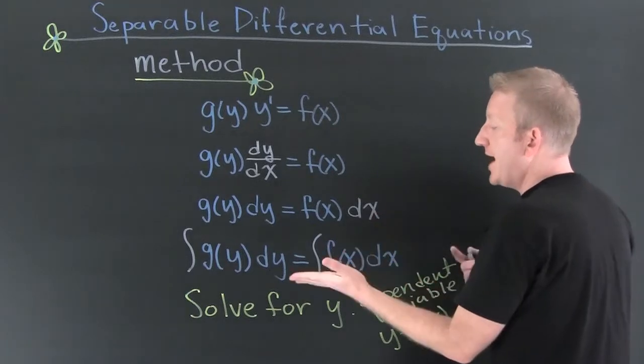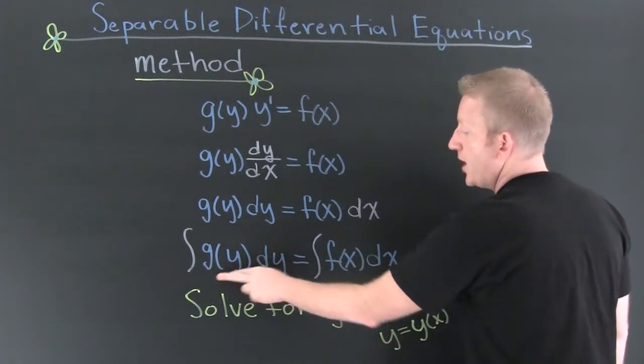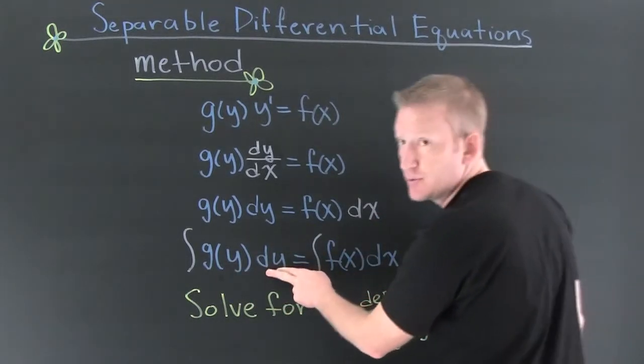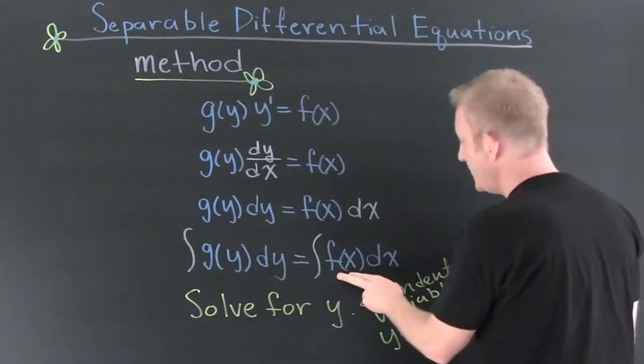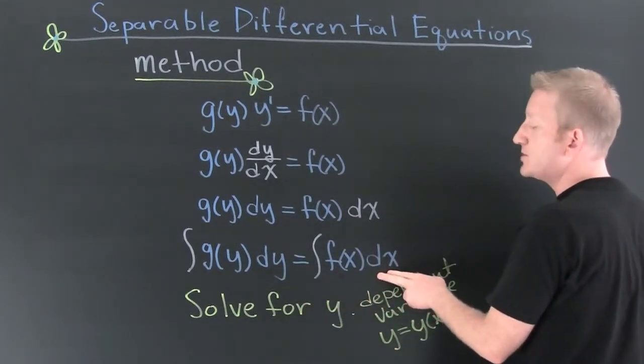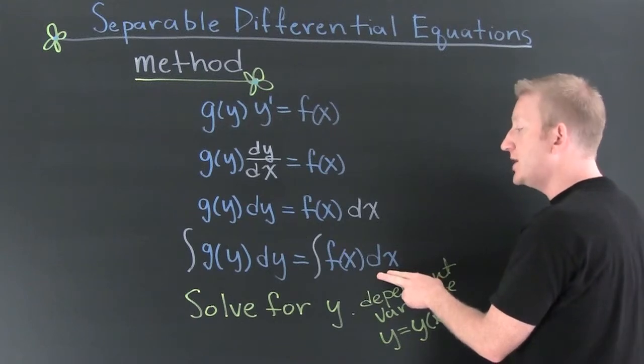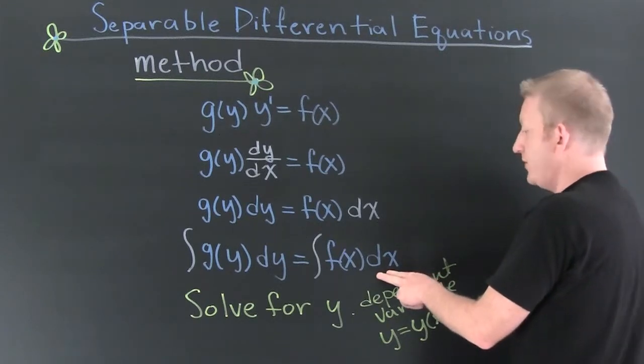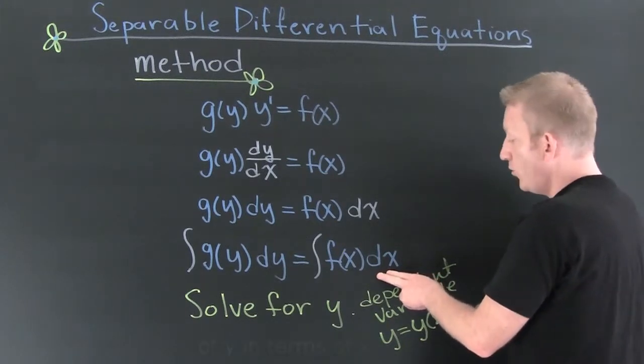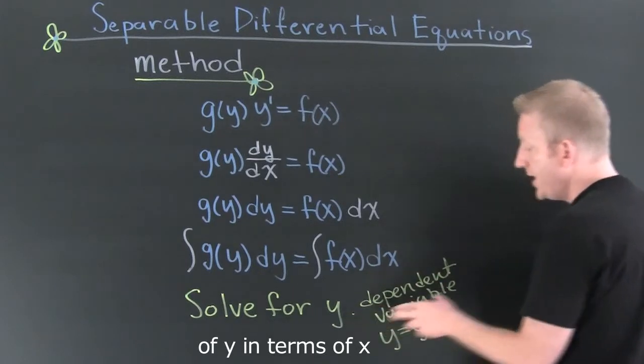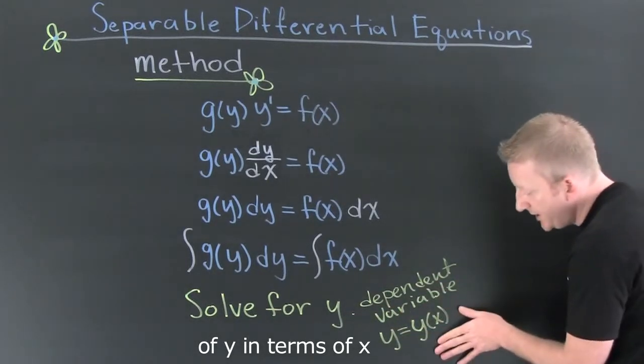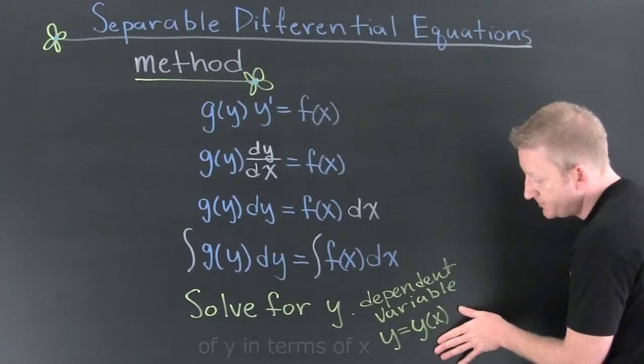And then after we have a function entirely of y, we're going to integrate that with respect to y. A function entirely of x, we're going to integrate that with respect to x. And then what are we going to do after that? In order to get a function for our dependent variable y, we're going to solve for y. And that's going to get us a function.